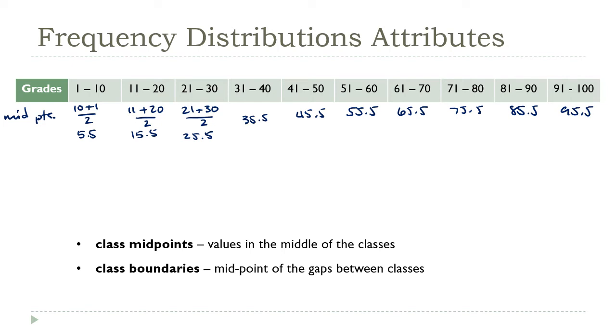All right, now to see the class boundaries, notice that there are gaps between each class. For example, the first class ends with 10, but the second class doesn't start until 11. It's those gaps that are going to determine the class boundaries. So the class boundaries are just the midpoint of each gap. So the class boundaries of this second class would be 10 plus 11 divided by 2. That's 10.5.